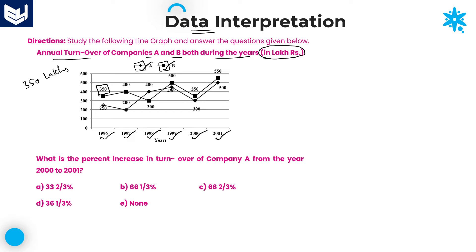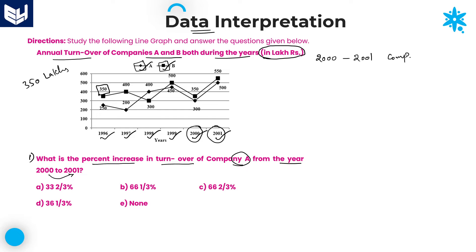Now, based on this information, we need to solve the questions. Look at the first question. What is the percentage increase in turnover of company A from the year 2000 to 2001? Here, we are talking about 2000 and 2001, and we are talking about company A — the percentage increment that we need to calculate.